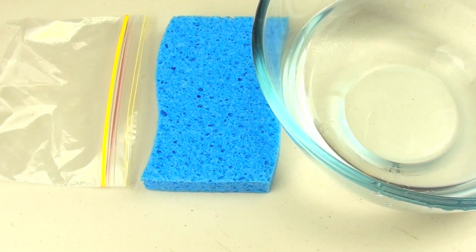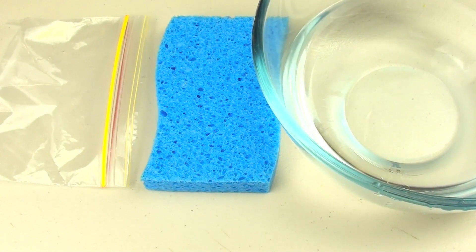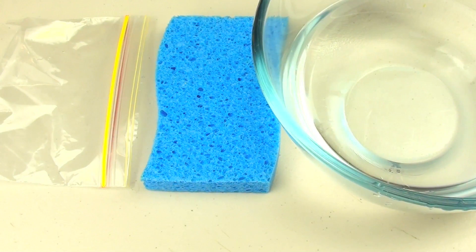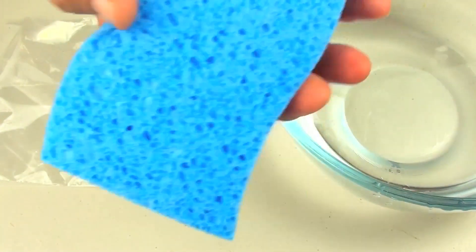Now every household should have an ice pack in their freezer for emergencies, but let's be honest, they are rather expensive—ten, twenty, sometimes thirty dollars depending on the size. But this is an extremely cheap way to make one without buying any special chemicals or liquids or bags or anything.